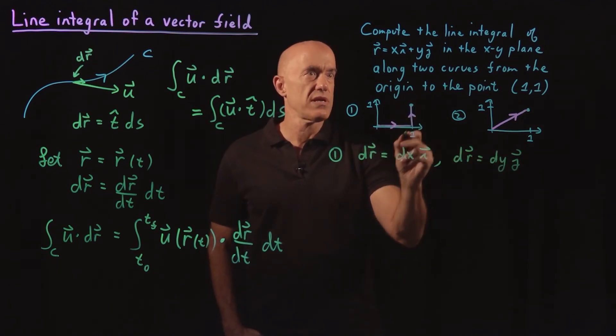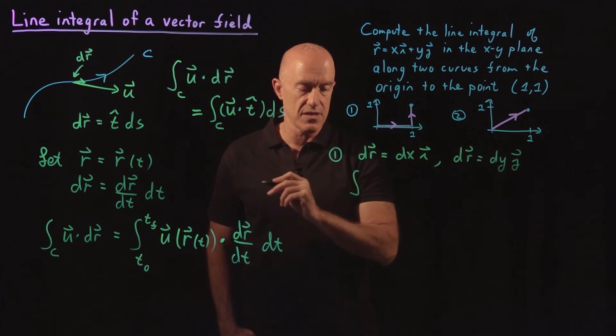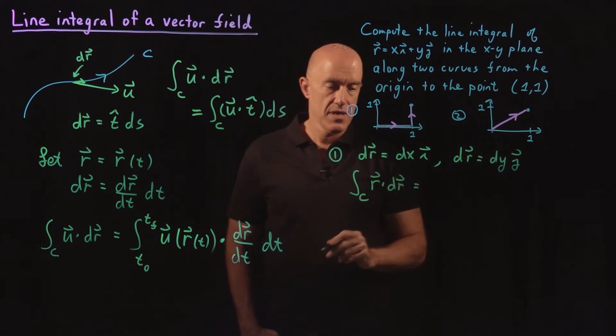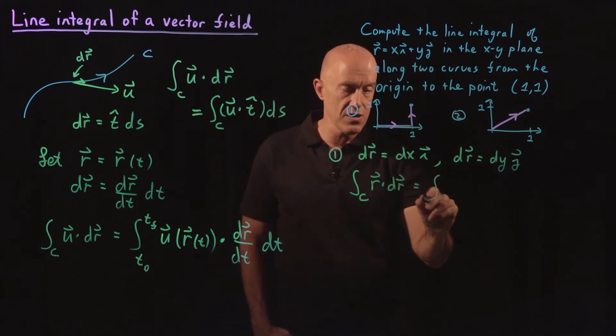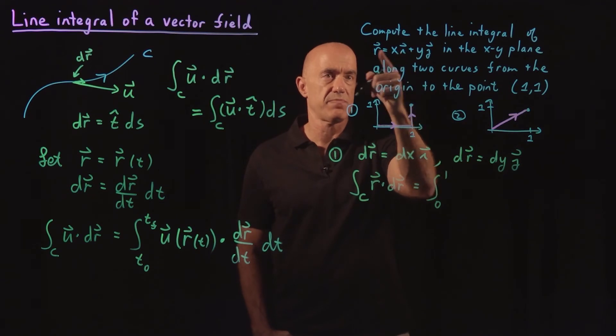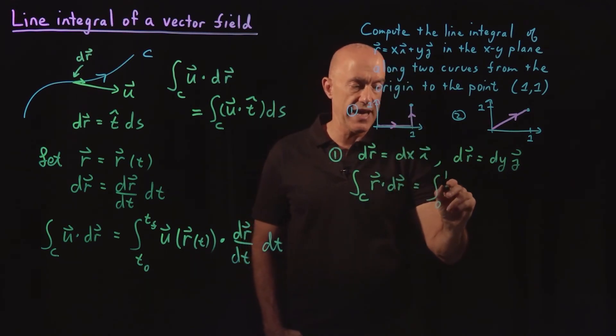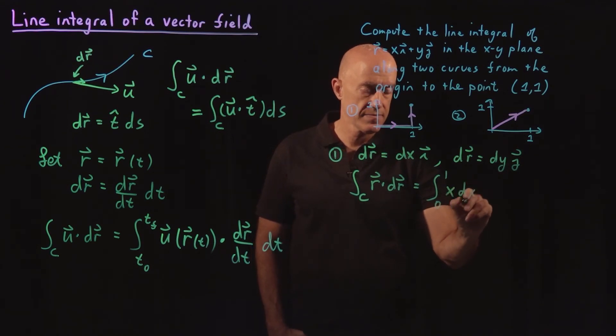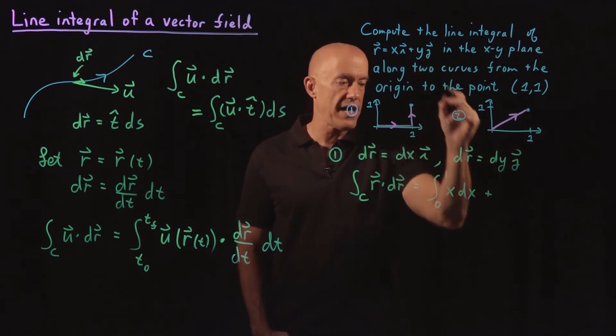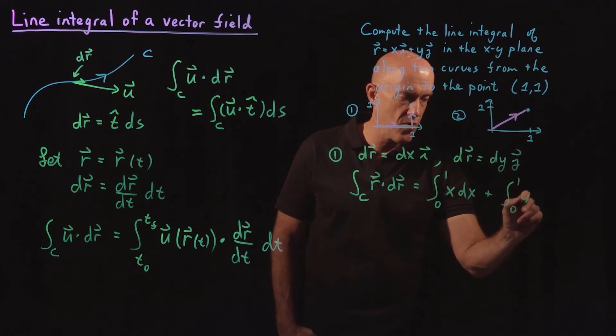So doing these line integrals, we have the line integral along this curve of R dot DR is going to be the integral along x. So x goes from 0 to 1. Since DR is along the i direction, it just picks out the x i vector from R. So this will be just x dx. Then the integral along the y direction, DR is dy j. So R dot DR there will just pick out y. So that will be, as y goes from 0 to 1, y dy.